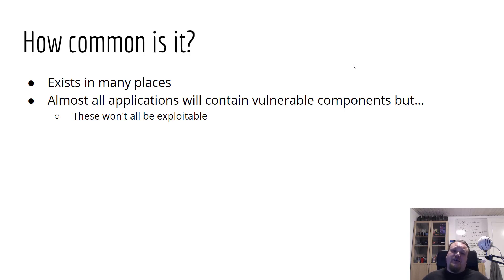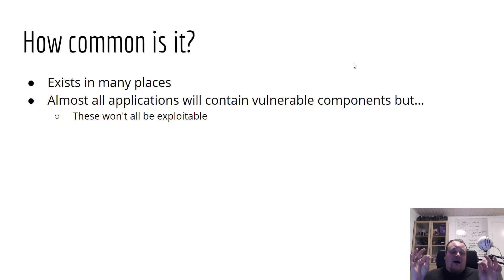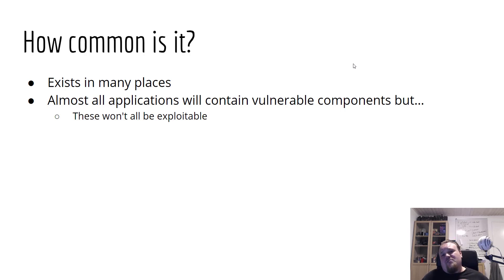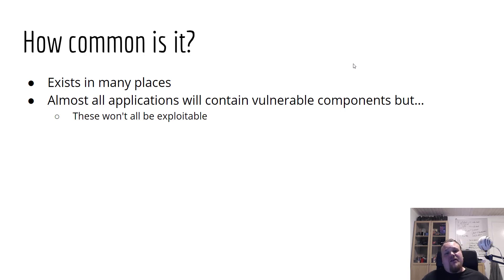Almost all applications will contain vulnerable components. However, it doesn't mean they're all exploitable. Some components have a certain vulnerability that might not be exploitable. How can something be vulnerable and not exploitable? It could be that it shows something you might not want shown — that might not lead to an actual exploit, but it might lead a hacker to think about it without really getting anything out of it.